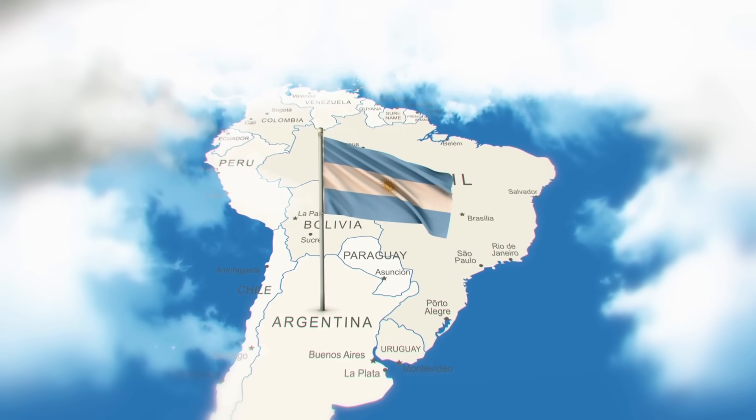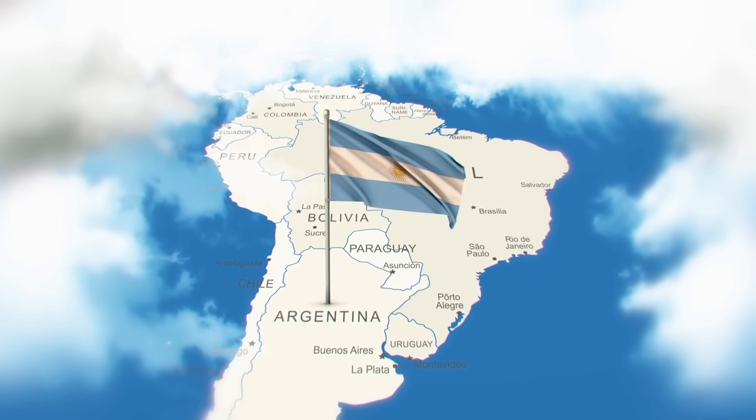From 'argentum' we actually get the name of the country Argentina, because when the Spaniards arrived in the Americas in the 16th and 17th centuries, they were rather excited about the large amounts of precious metal they were able to take back with them. They named Argentina using the Latin word for silver. But there is also an element named after the Spanish word for silver: platinum. It comes from the Spanish 'plata,' meaning 'little silver.' The Spaniards thought platinum was an inferior form of silver — how wrong they turned out to be.